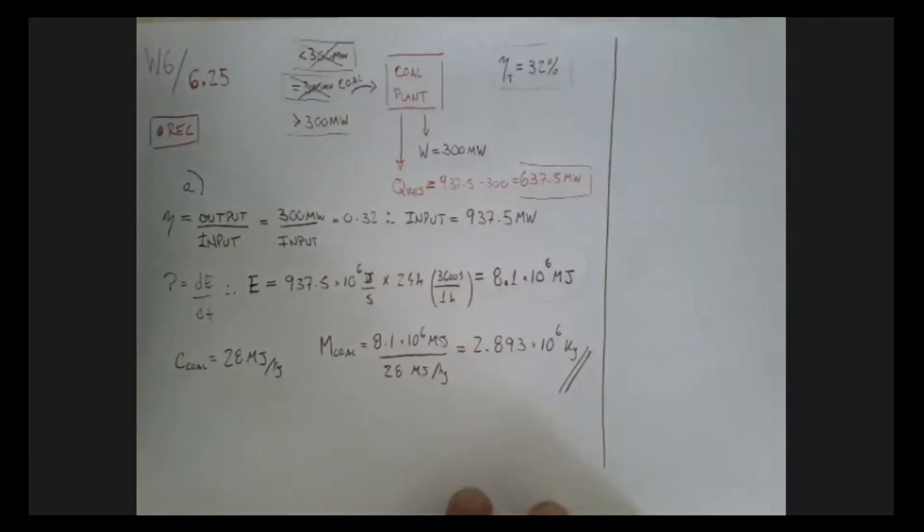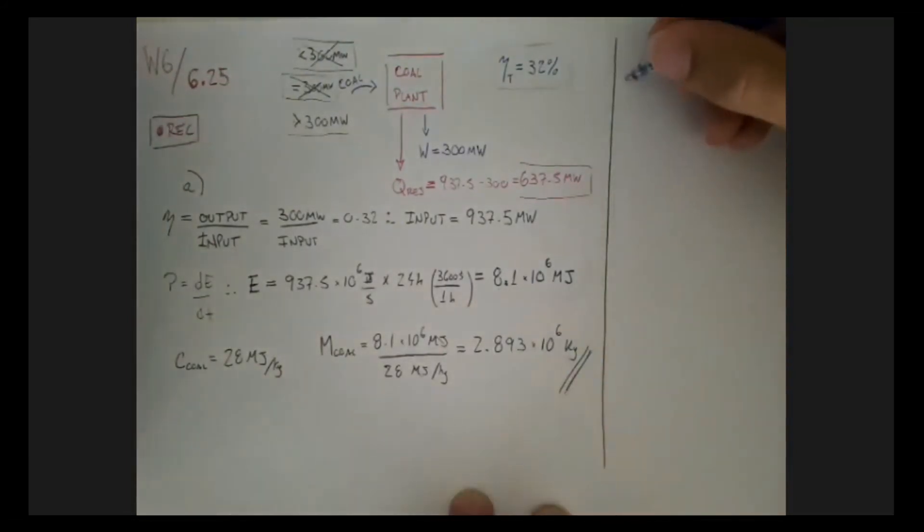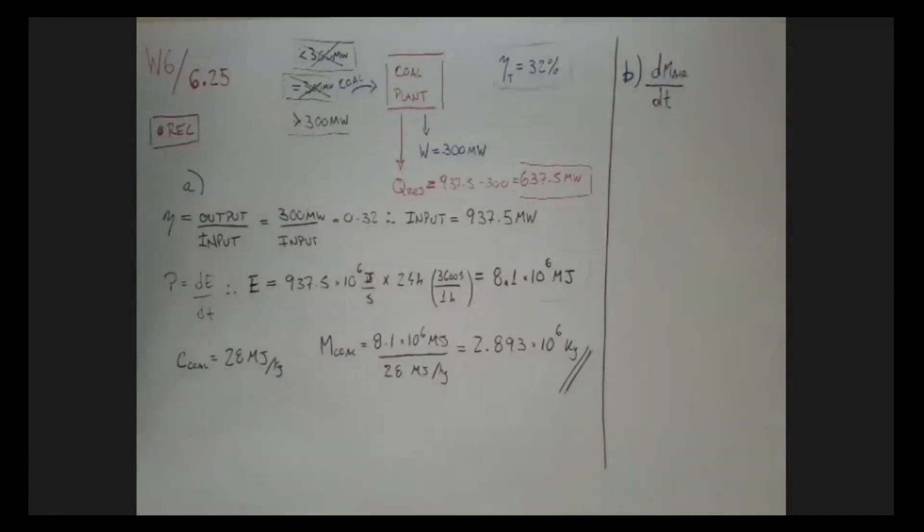Now, part B is actually a bit more simple. For part B, we need to know the rate of air flowing through the furnace, the rate of air. So if I want the rate of air, I'm going to have the mass of air, but to have the rate, I need to know how it varies with time. So let's first find the mass of air.